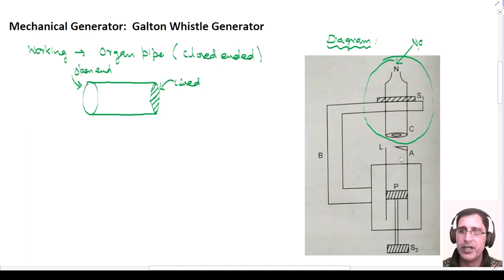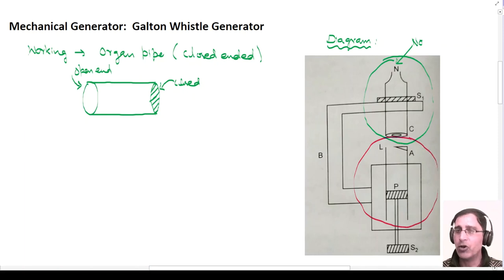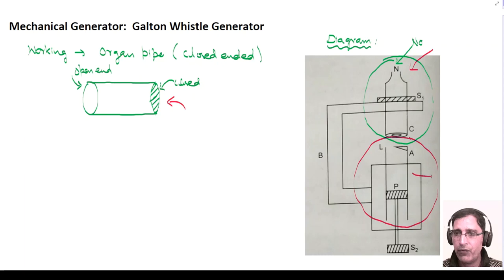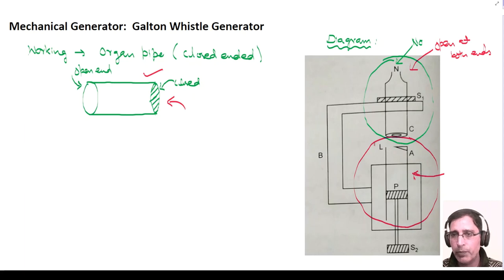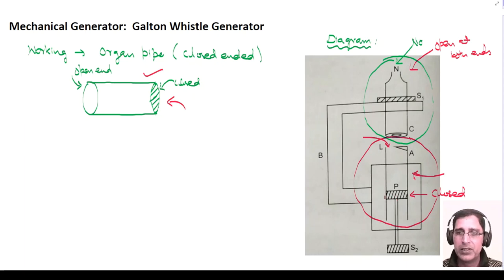We have a segment represented by L. We have an organ pipe — the upper organ pipe is open at both ends. But the lower organ pipe is the pipe we use during operation of the mechanical generator. In this lower pipe, we use the symbol L. This lower pipe is closed at the lower end with a frictionless airtight piston, and the upper part is open-ended.